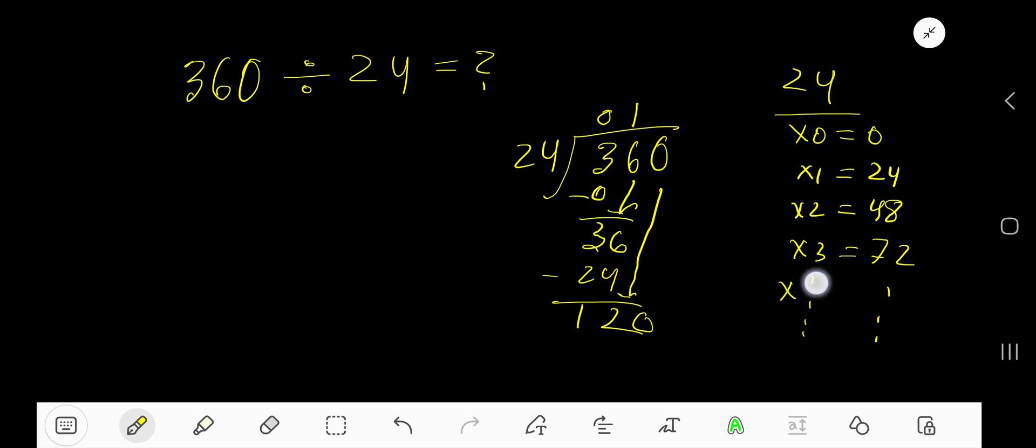Then 4 times 24: add 24 to 72 to get 96. Then 5 times: 96 plus 24. 6 plus 4 is 10, write 0 and carry 1 to the next column. 9 plus 2 is 11, plus 1 is 12.